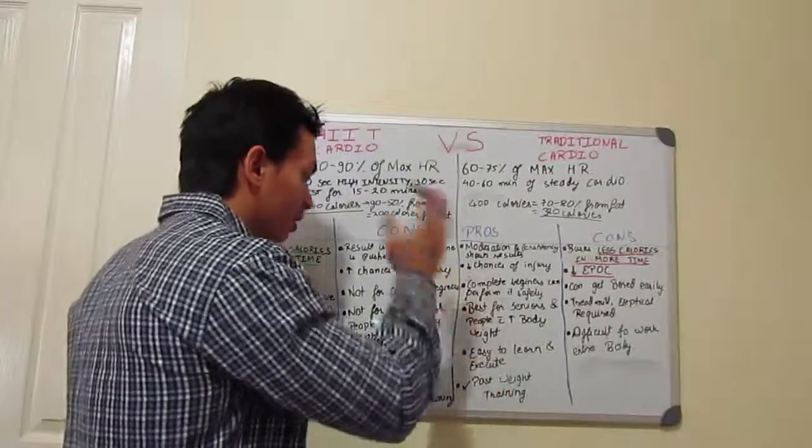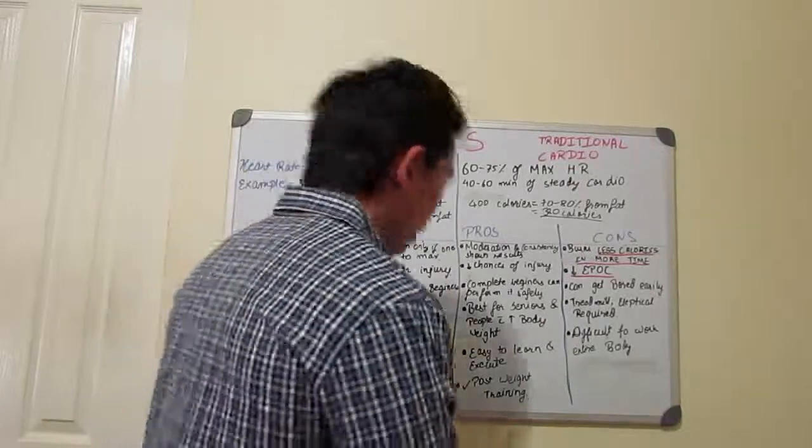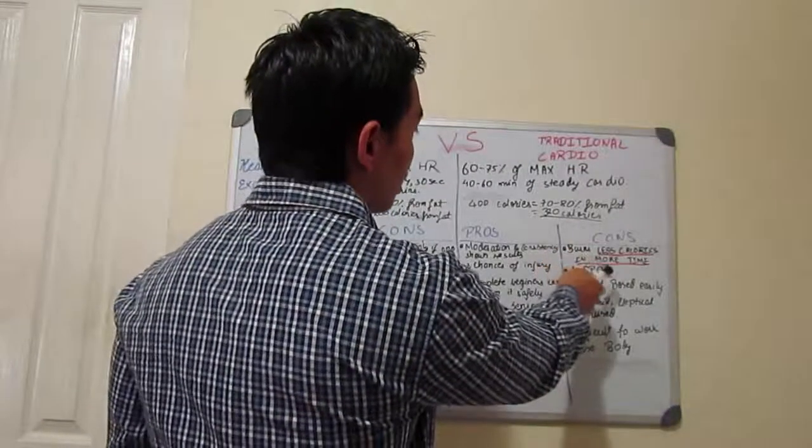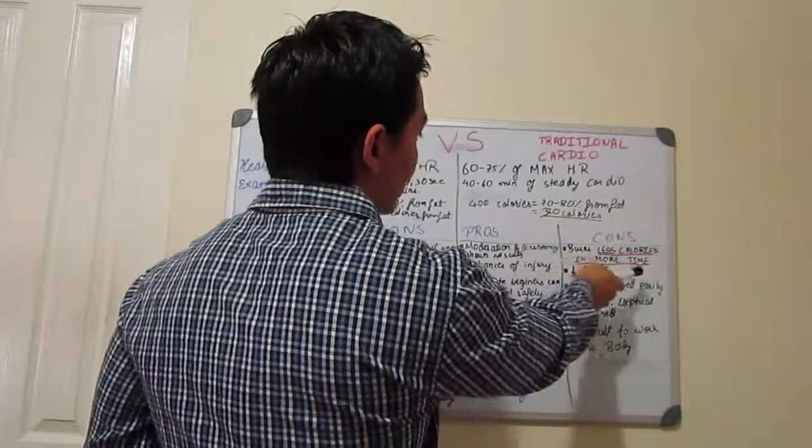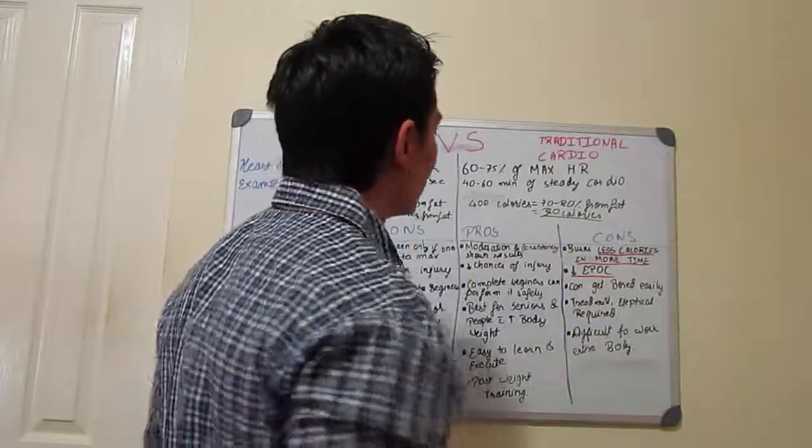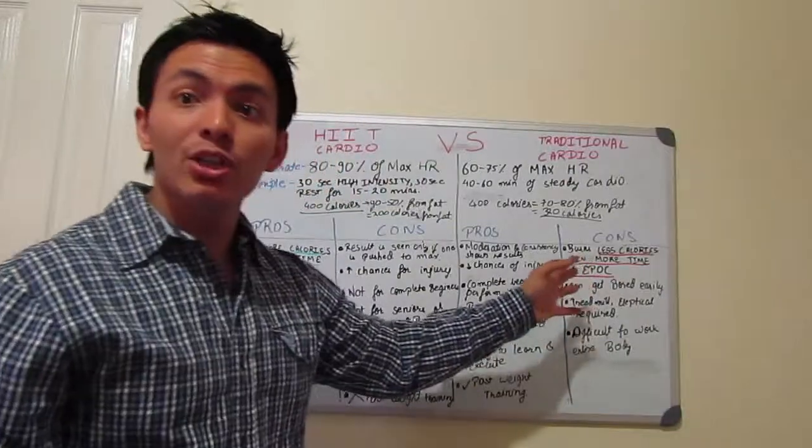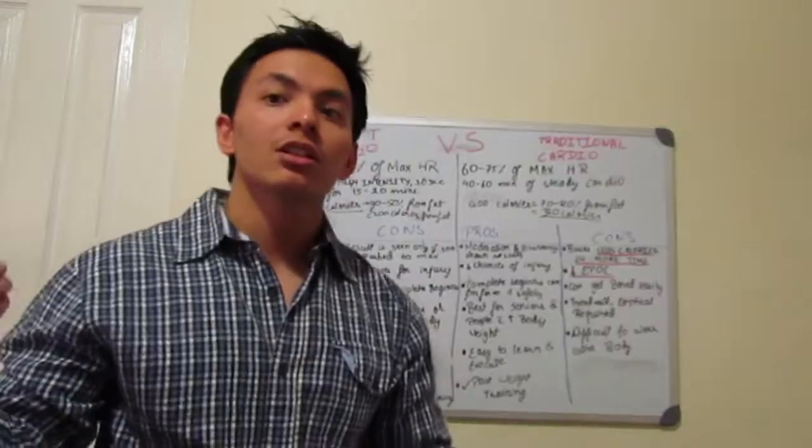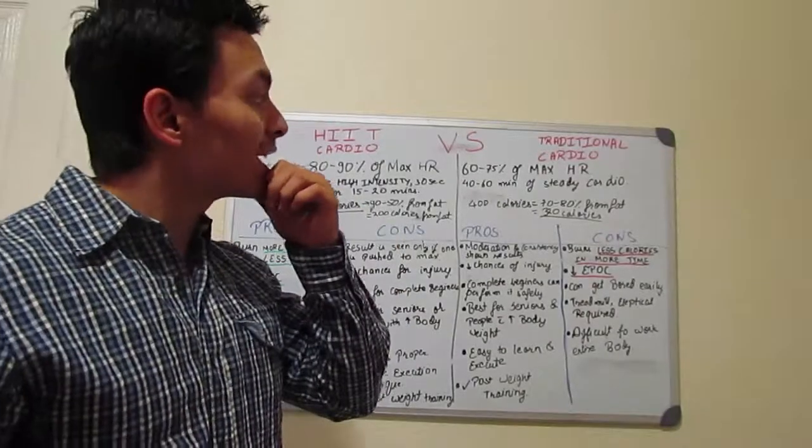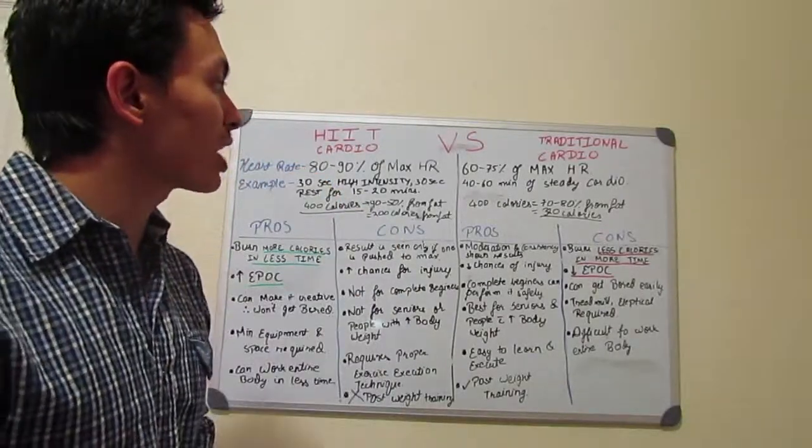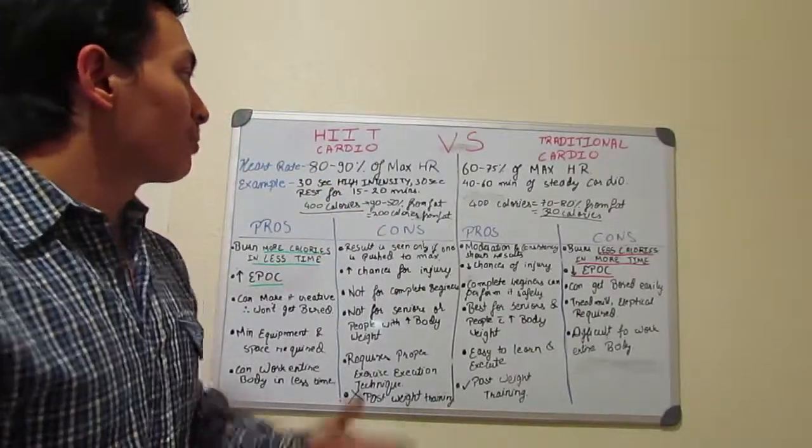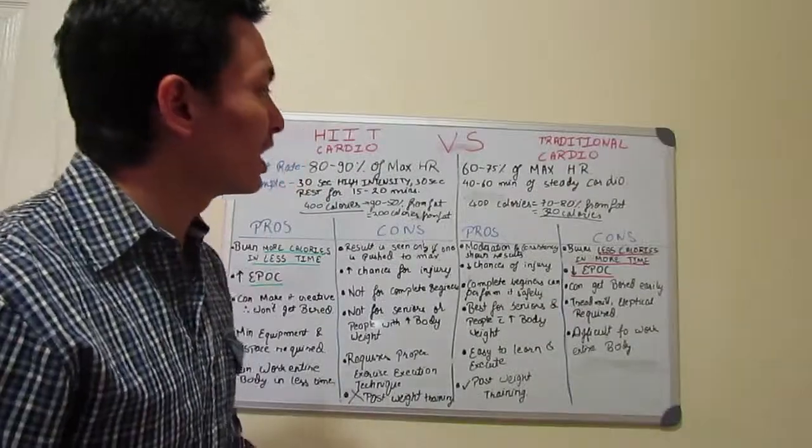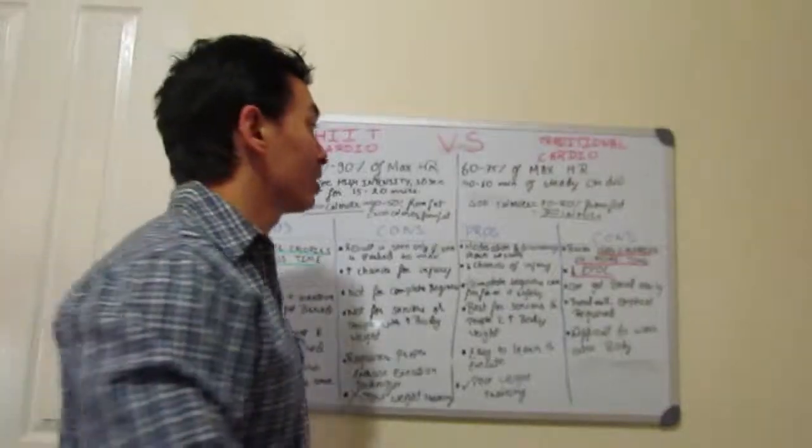And again, I think I have gone with the advantages and then all the advantages. And then, it's going to be about the cons again. Burning less calories in more time. Again, decrease EPOC. The post-workout oxygen consumption is going to be less. So you'll not be burning that much calories as compared to the other one. You can get bored easily sometimes. You'll begin doing the same thing again and again.